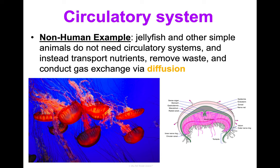The excretory system goes hand in hand with the digestive system. Many people think it's just about urine and feces, but that's not true. Its main function is water balance and getting rid of waste — including sweat, urine, and filtering your blood. Key structures include your kidneys, bladder, lungs, and even your skin. So many people associate it only with urination and defecation, but it's much more than that.